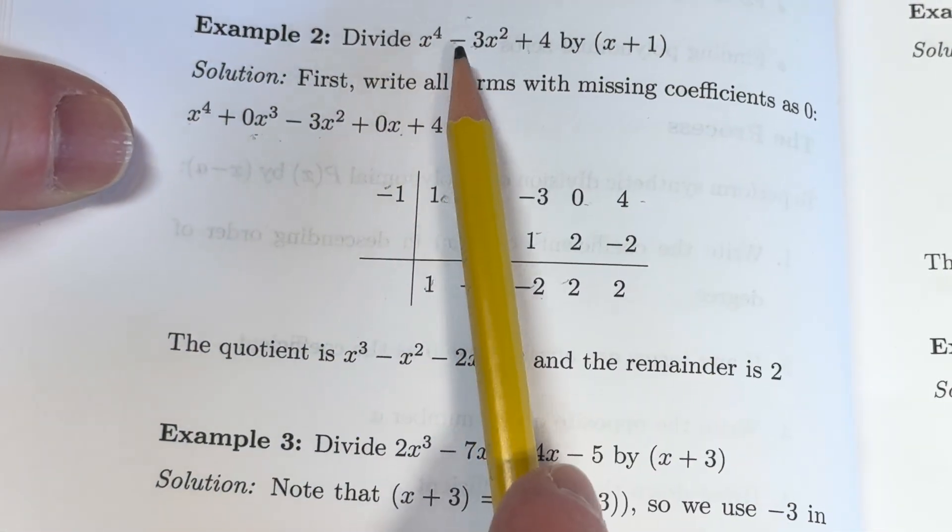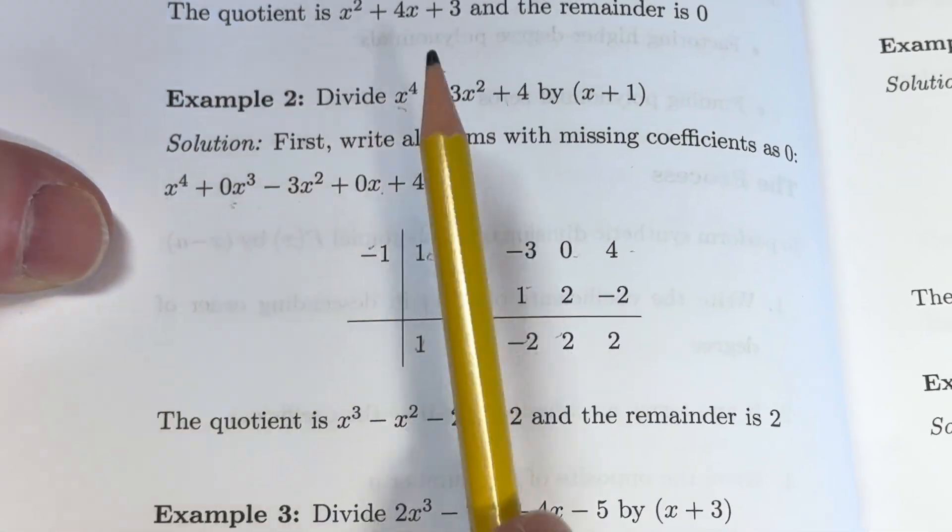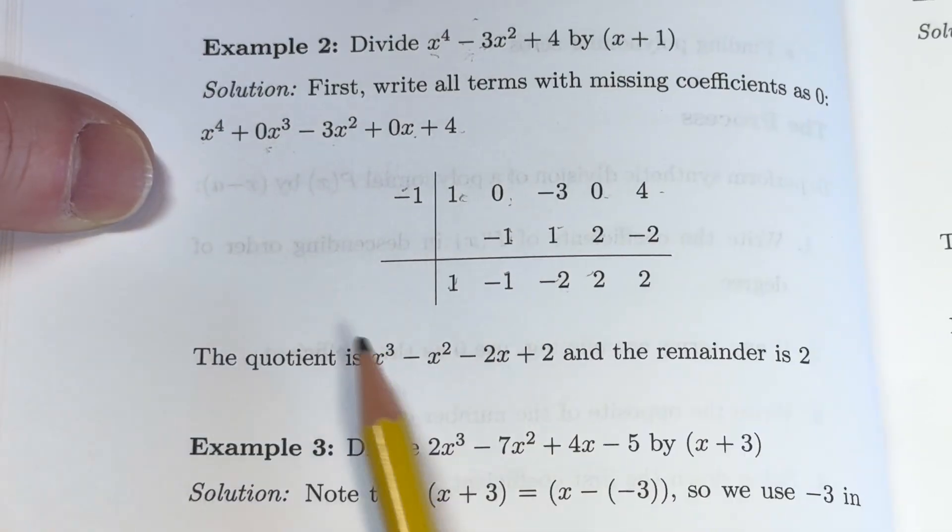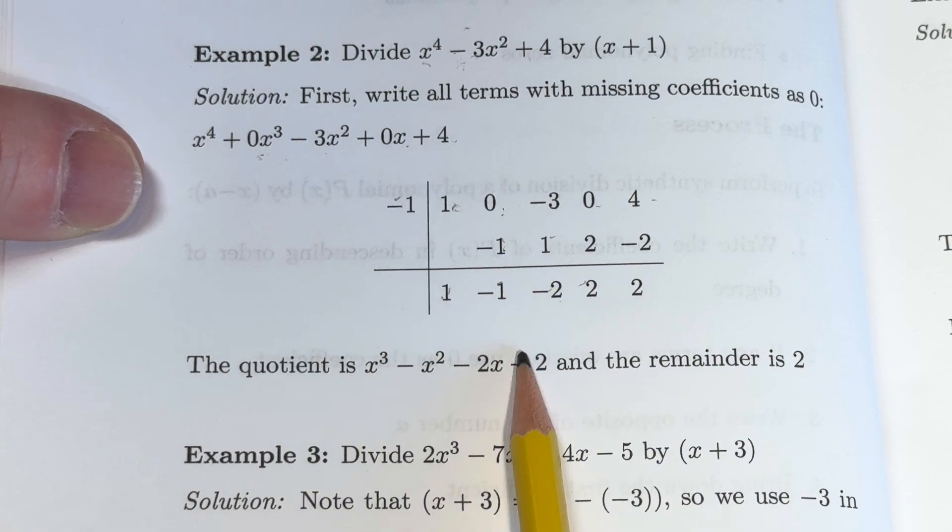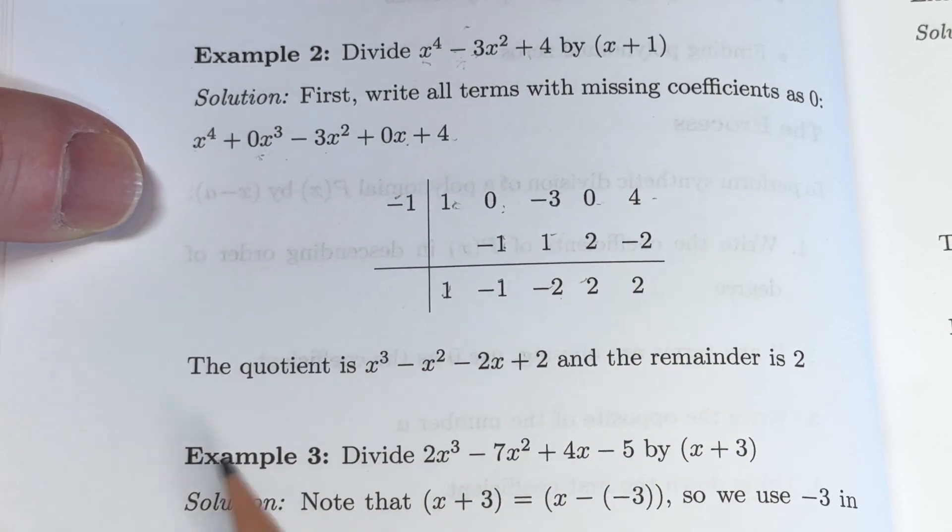Then you start at 1 degree less. So this is a 4 here. So you want to start at 3. So x cubed minus x squared minus 2x plus 2. And the remainder here is 2. And that would be the final answer.